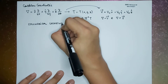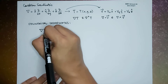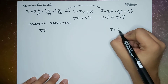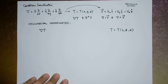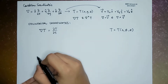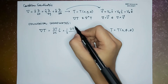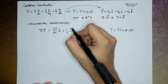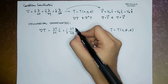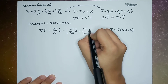Now in cylindrical coordinates, we express the gradient of a scalar field t, where t is a function of s, phi, and z, as: the derivative of t with respect to s times s-hat, plus 1 over s times the derivative of t with respect to phi times phi-hat, plus the derivative of t with respect to z times z-hat.